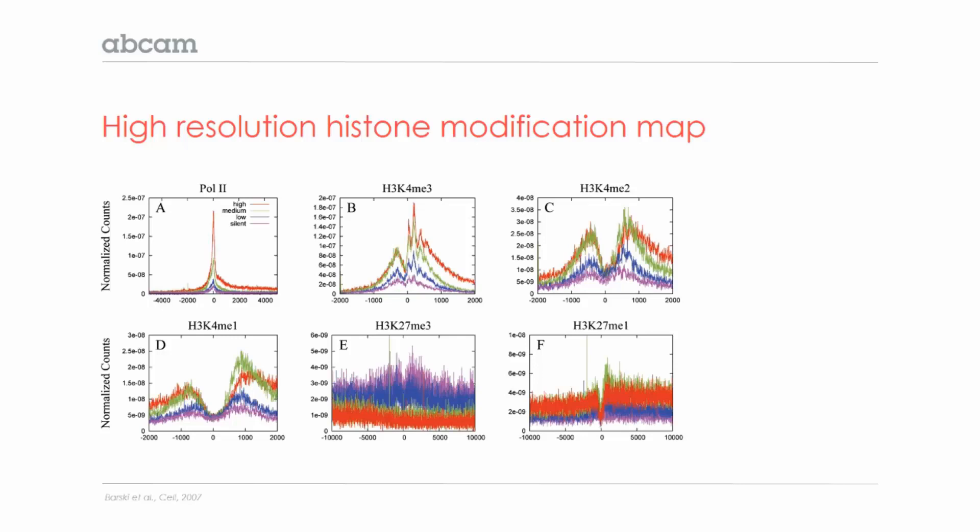They separated the genes into groups based on their expression levels, either high, medium, low, or silent genes, as indicated by the different colors, and aligned them relative to the transcription start sites.